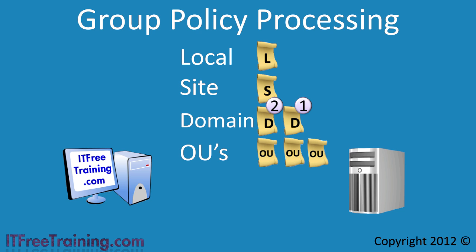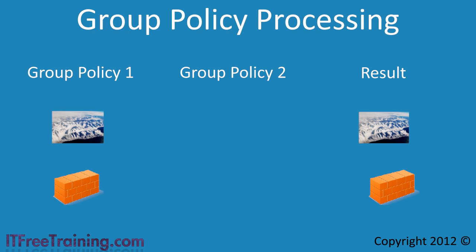It may seem a bit confusing which order Group Policy is applied first, but if you think of higher priority Group Policy needing to overwrite lower priority, it makes sense that Group Policy with a lower priority must be processed first. This is why Local Group Policy is applied first — it has the lowest priority, and thus any other Group Policies that have been applied have the capacity to overwrite any settings configured in the Local Group Policy.